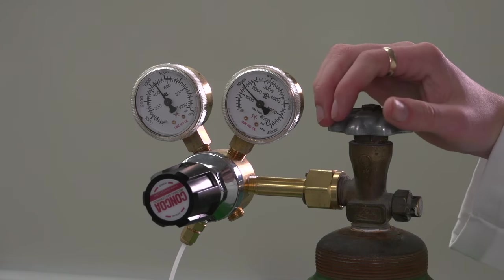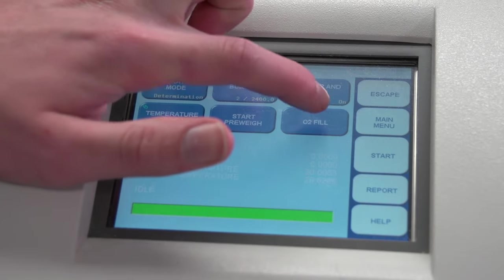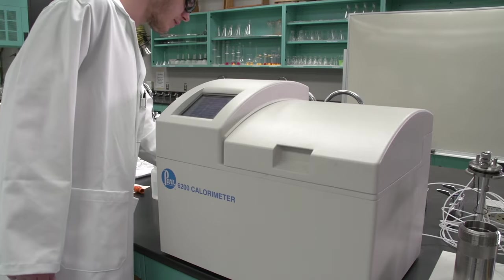At the end of the experiment, turn off the main valve of the oxygen tank. Release the pressure by pressing the O2 fill button and turn off the calorimeter using the power button at the back of the instrument.